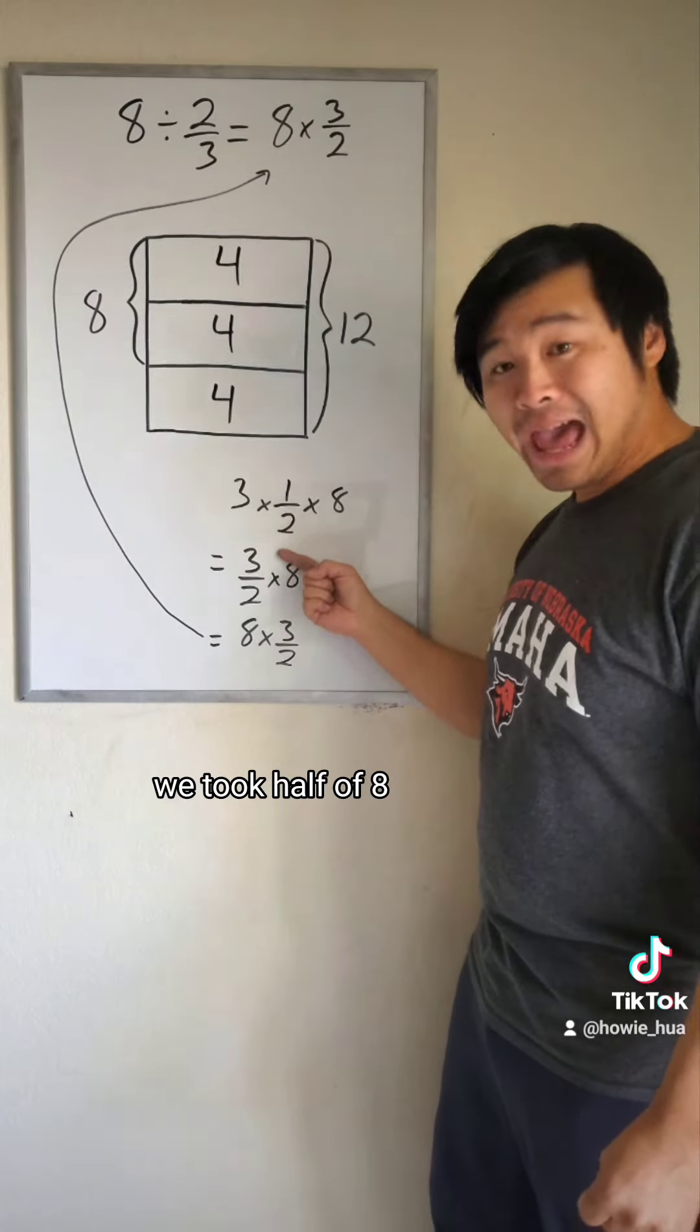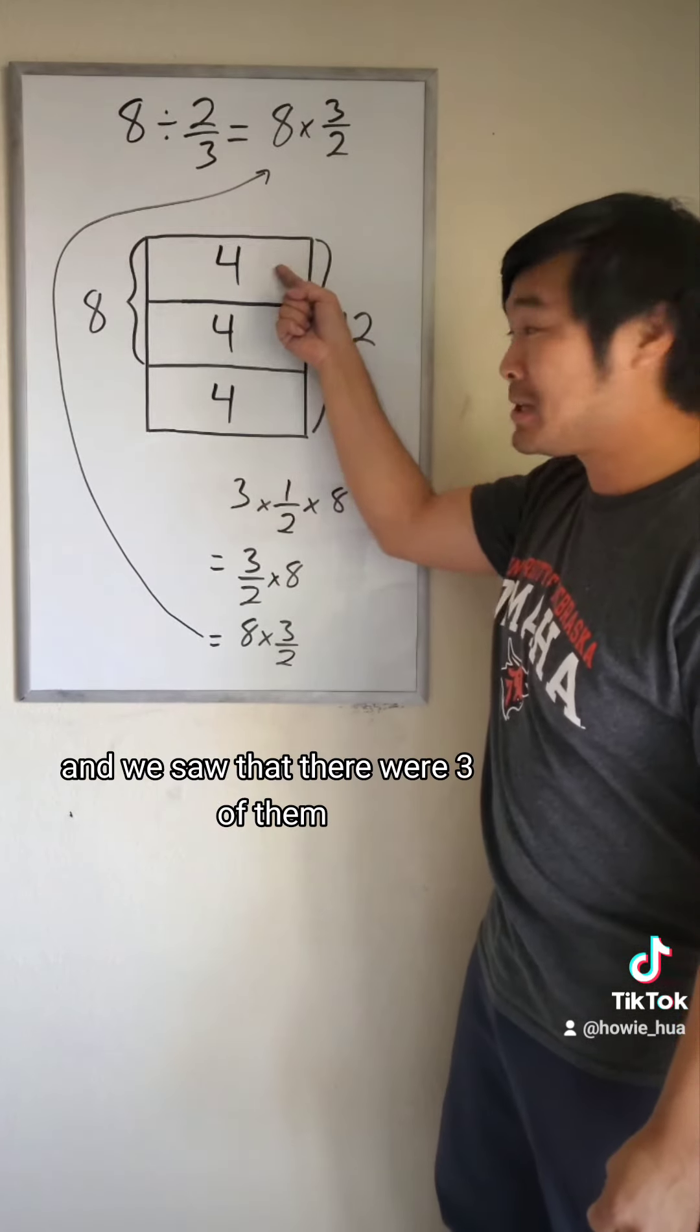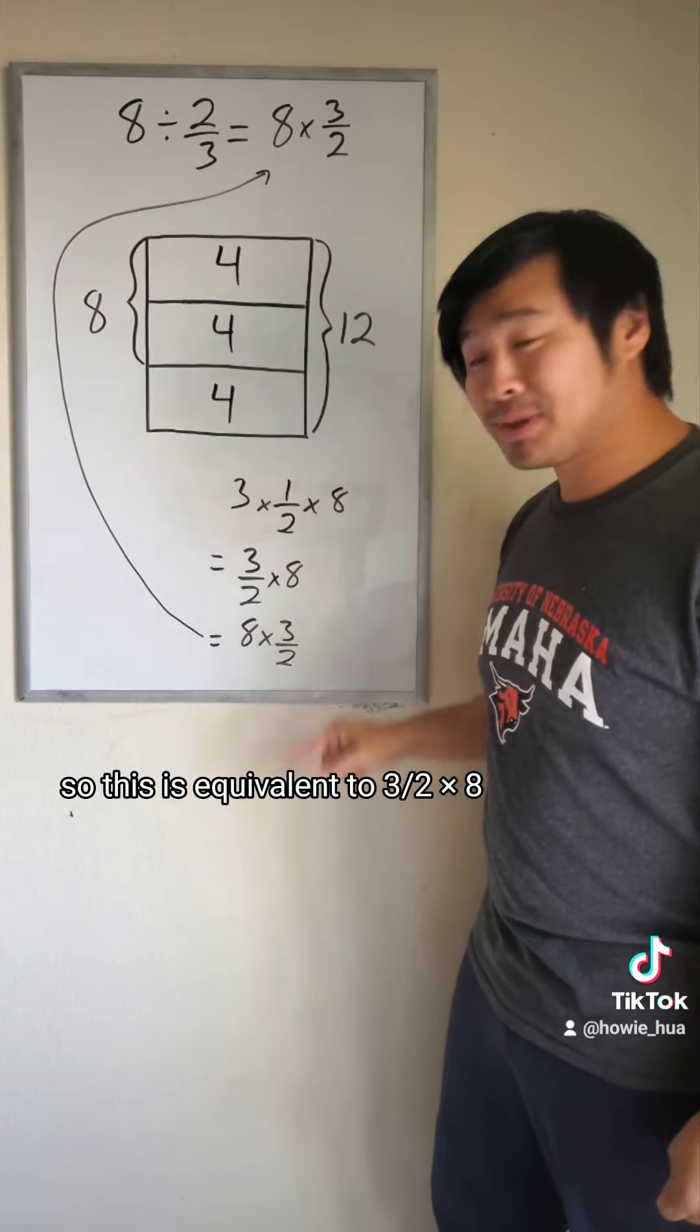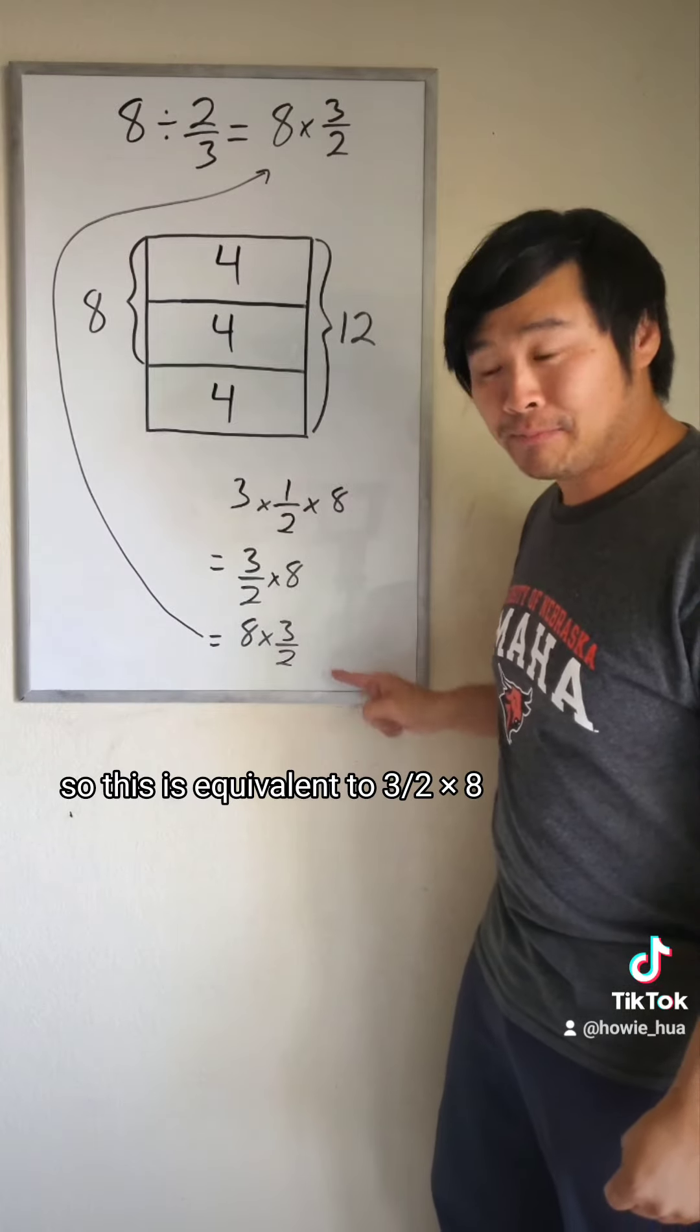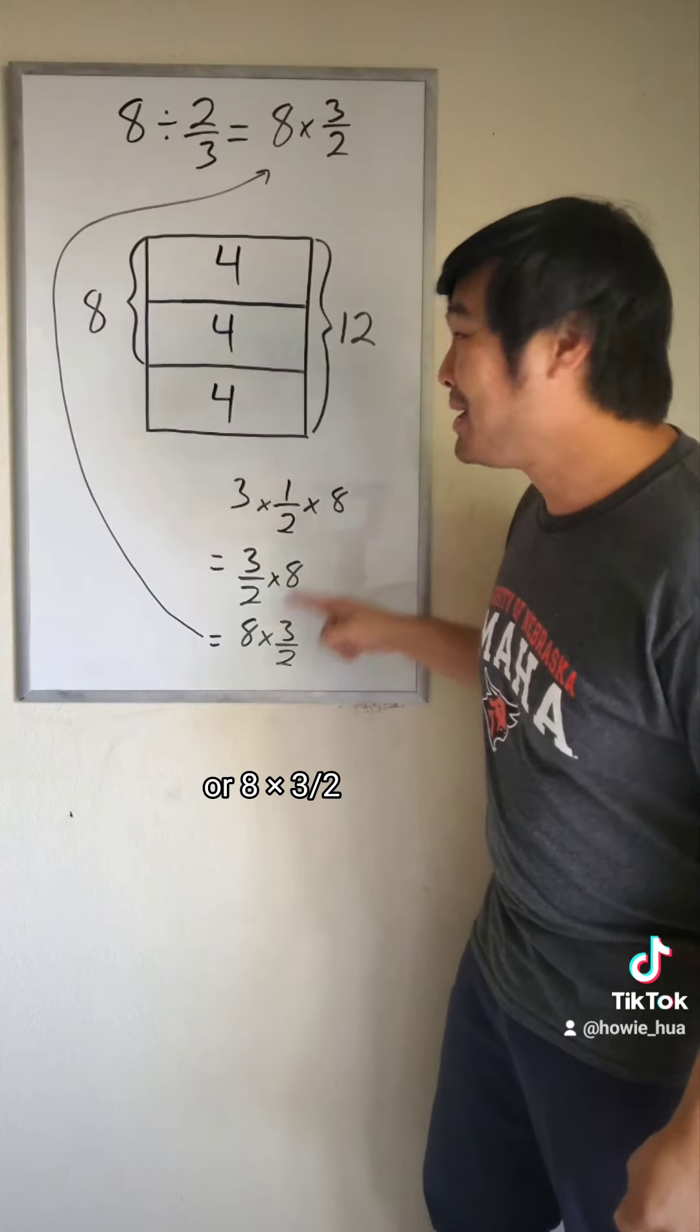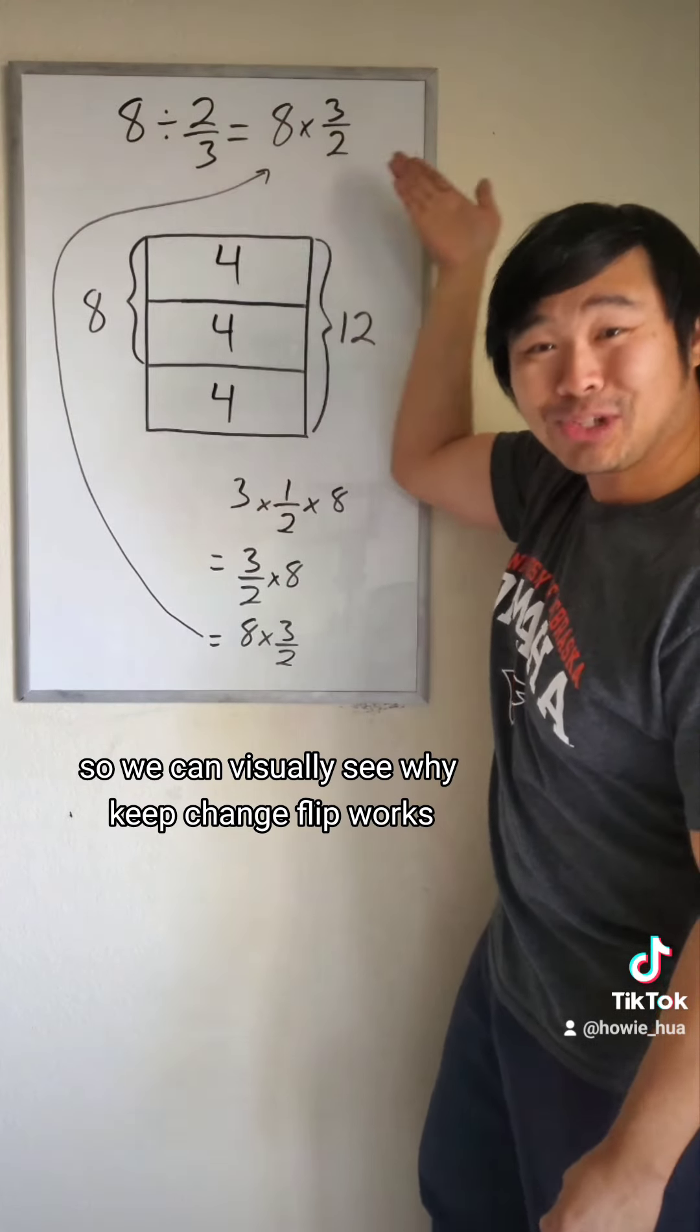So here's what we did. We took half of 8, which is 4, and we saw that there were 3 of them. So this is equivalent to 3 halves times 8, or 8 times 3 halves. So we can visually see why keep change flip works.